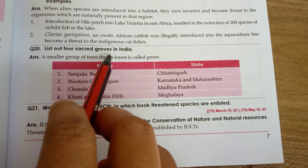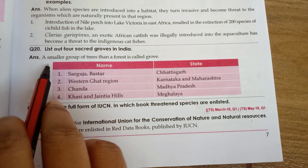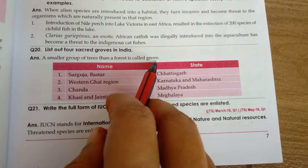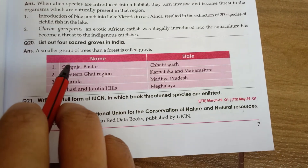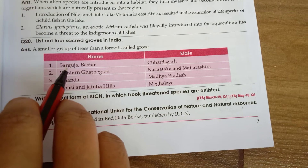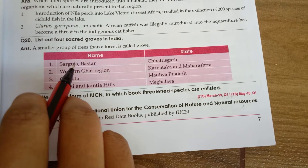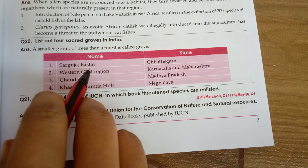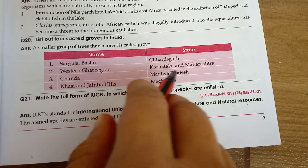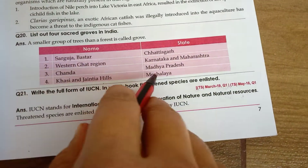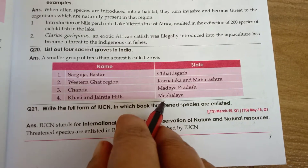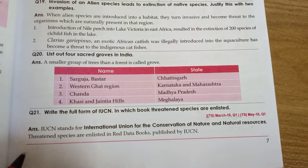List out four sacred groves in India. A smaller group of trees than a forest is called a grove. Sacred groves in India include: Sarguja and Baster in Chhattisgarh, Western Ghats region in Karnataka and Maharashtra, Chanda in Madhya Pradesh, and Khasi and Jaintia Hills in Meghalaya.